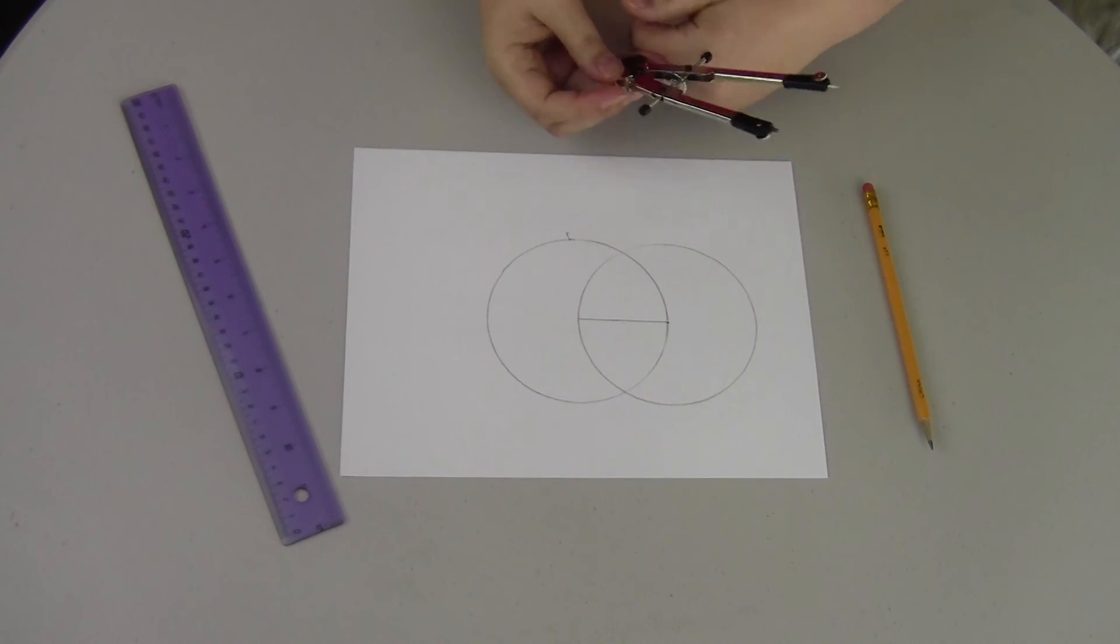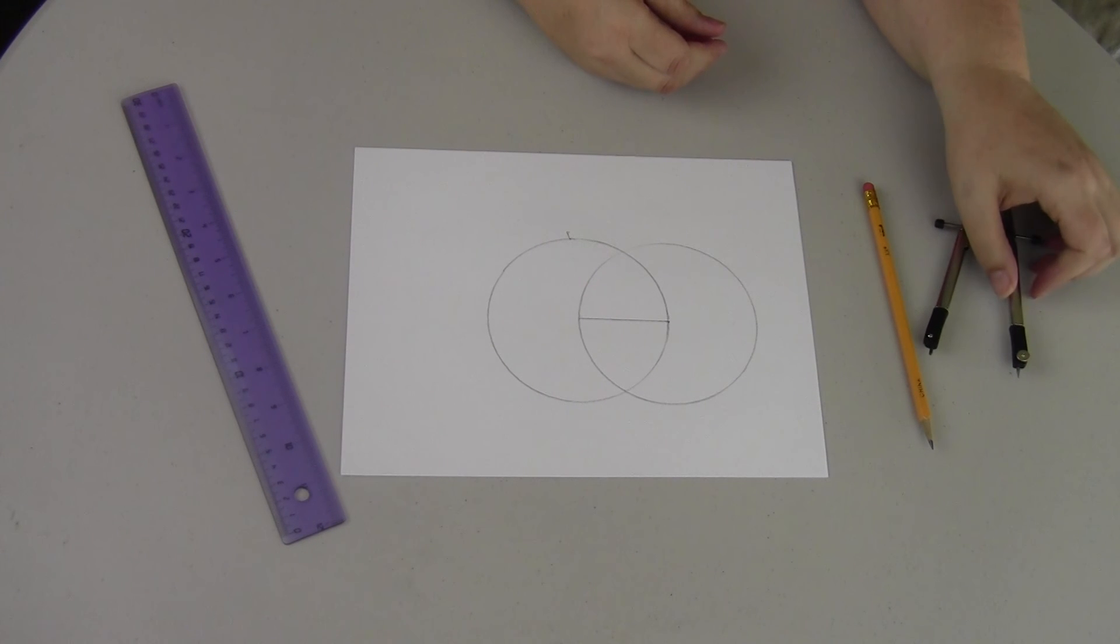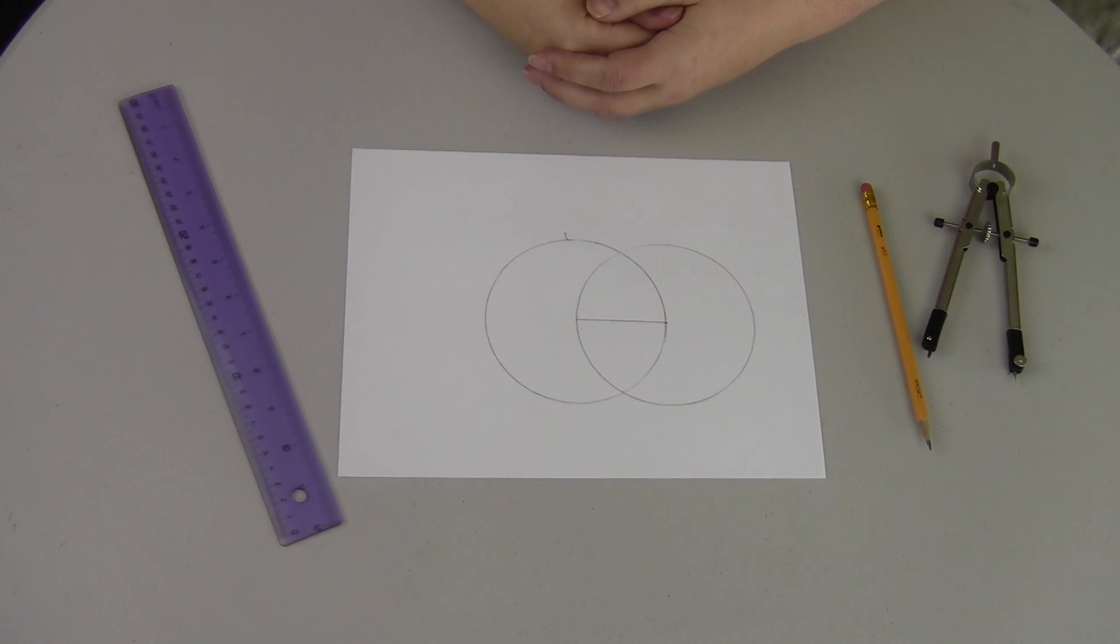And you've completed the Vesica Pisces, which represents opposites.